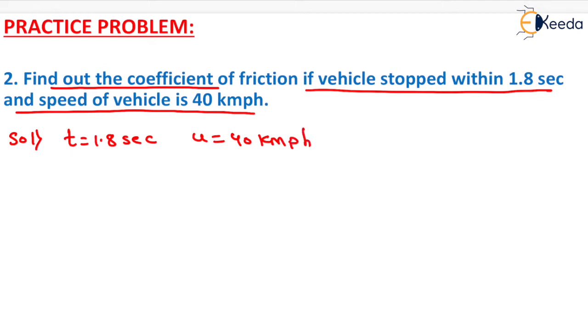Now, we know that -a equals u divided by t, where u is initial speed in meters per second. So u equals 0.278 times 40 to convert from km per hour to meters per second. Dividing by time 1.8 seconds, we get -a, the retardation, equals 6.17.